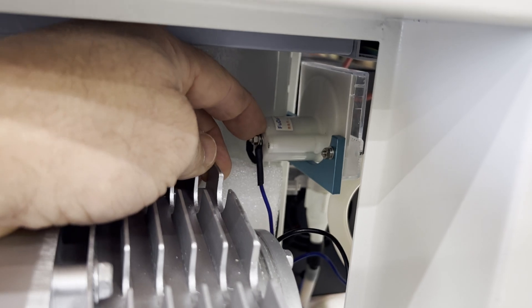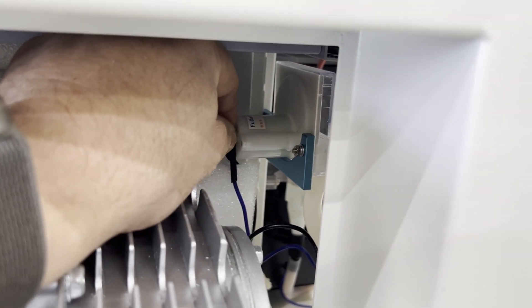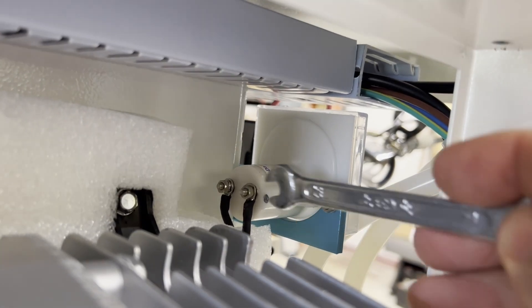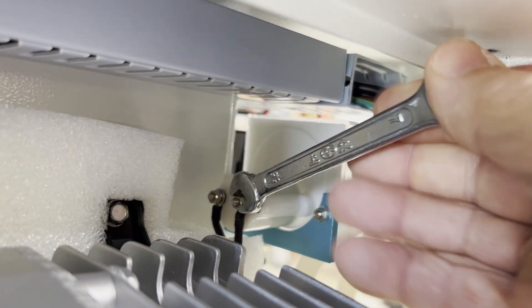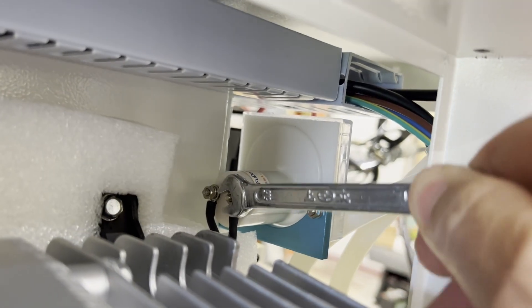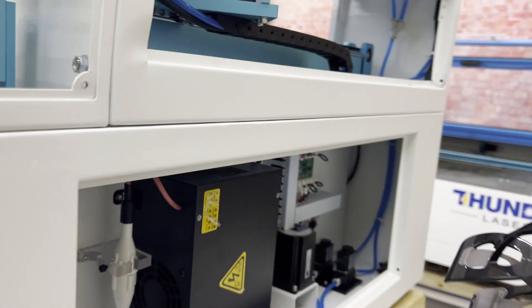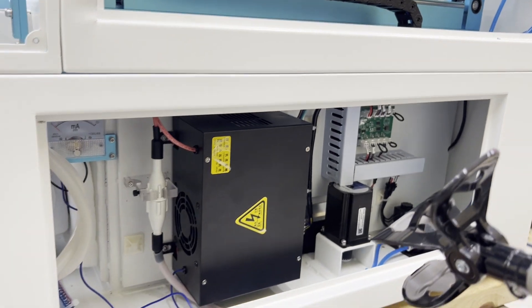Then using a needle nose pliers or the right size wrench, a 5.5 millimeter wrench will fit over this nut, and then you can use that to tighten it down. Once you have that tightened down, you can go ahead and plug the unit back in and we can start testing and making sure that this new LPSU is firing properly.